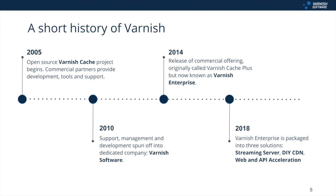Varnish Software then released a commercial offering distinct from the open source project. Originally called Varnish Cache Plus, it's now known as Varnish Enterprise. There are many good reasons for releasing a commercial variant of Varnish technology — simply put, the wider content delivery market was crying out for a way to use Varnish for a wider variety of new use cases.